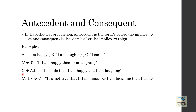In the second example, C implies A∧B (that is A and B). C is the antecedent and A∧B, meaning A and B, is the consequent. So in the sentence, 'I smile' is the antecedent, and 'I am happy and I am laughing' is the consequent.